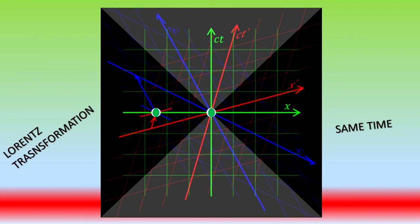According to the green perspective, A and B occur at the same time. According to the blue perspective, B occurs before A, and according to the red perspective, A occurs before B.